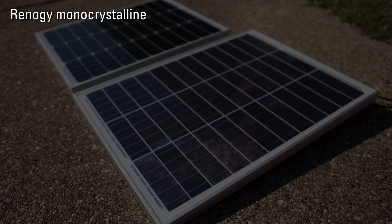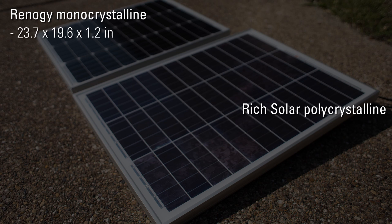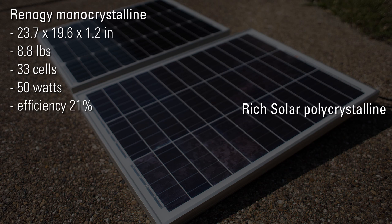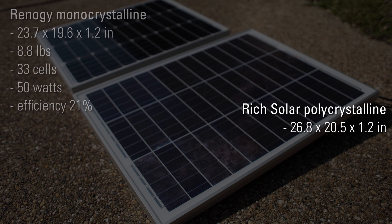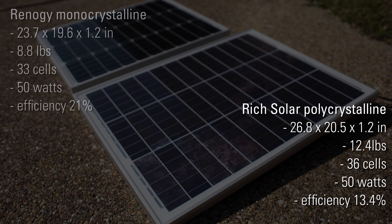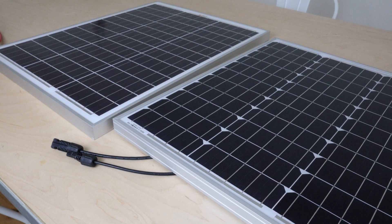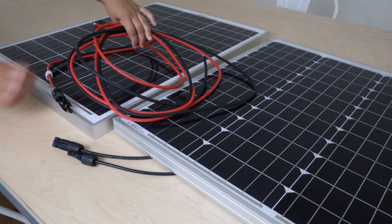To measure and compare them, I bought a Renogy monocrystalline panel and a Rich Solar polycrystalline panel on Amazon. The Renogy panel measures 23.7 by 19.6 by 1.2 inches, weighs 8.8 pounds, has 33 solar cells, a maximum power of 50 watts, and an efficiency of 21%. The Rich Solar polycrystalline panel measures 26.8 by 20.5 by 1.2 inches, weighs 12.4 pounds, has 36 cells, a maximum power of 50 watts, and an efficiency of 13.4%.